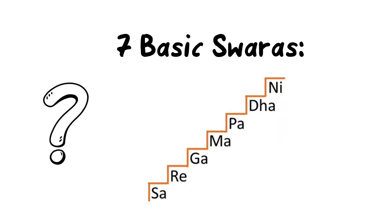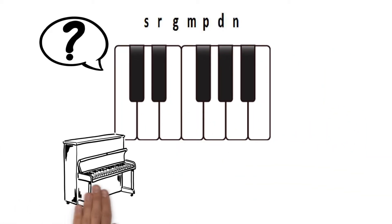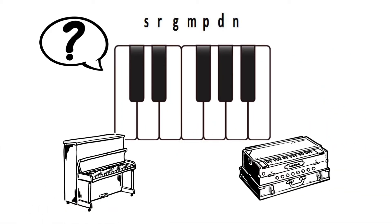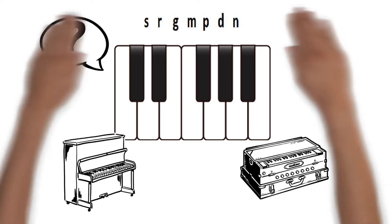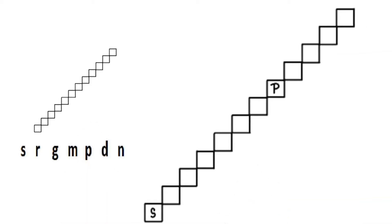The seven swaras are: Sa, Re, Ga, Ma, Pa, Dha, and Ni. But if there are only seven swaras, how come there are 12 keys in one octave of a piano or a harmonium? The answer is that each swara is not just a name — each swara has its own set of positions or pitches.